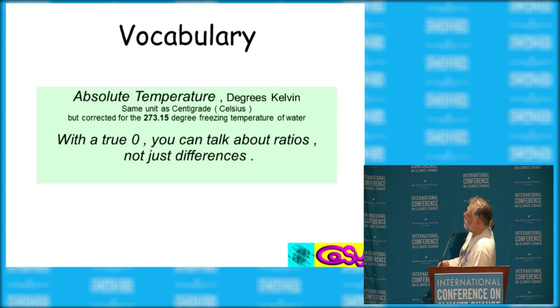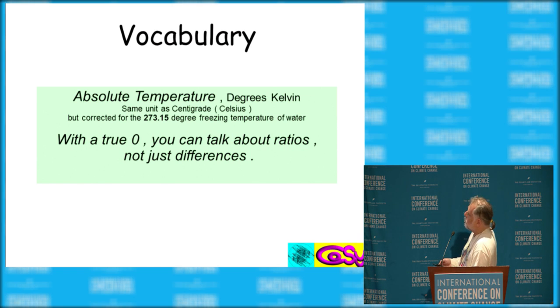Absolute temperature, you can actually talk about ratios. Here's the basic data from the invention of the steam engine until now. CO2 has gone up about 33 percent from about three molecules per 10,000 to four. Temperature, well, this is the one tipping point around the freezing point of water, 273.15.